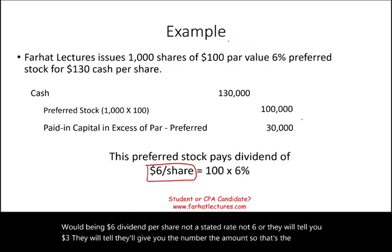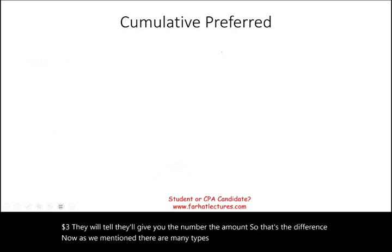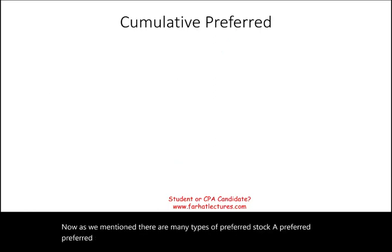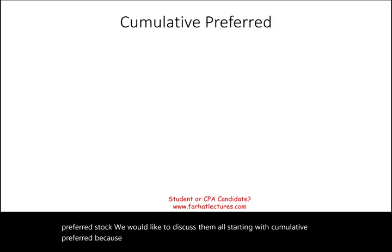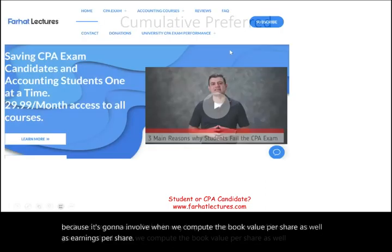There are many types of preferred stock, and we'd like to discuss them all. We'll start with cumulative preferred, because it's very important to understand — it's going to be relevant when we compute book value per share as well as earnings per share.